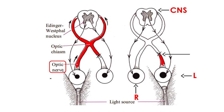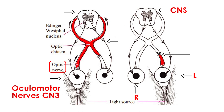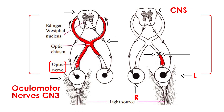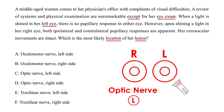But when you shine the light into the right eye, the optic nerve transmits the signal to the CNS, and then sends an outbound signal to both the right and left ocular motor nerves — also known as cranial nerve 3 — causing pupillary constriction in both eyes. In the left eye scenario, you do not get the outbound signal because the inbound signal is blocked by the lesion. So the lesion is located in the optic nerve on the left side — that would be choice C.